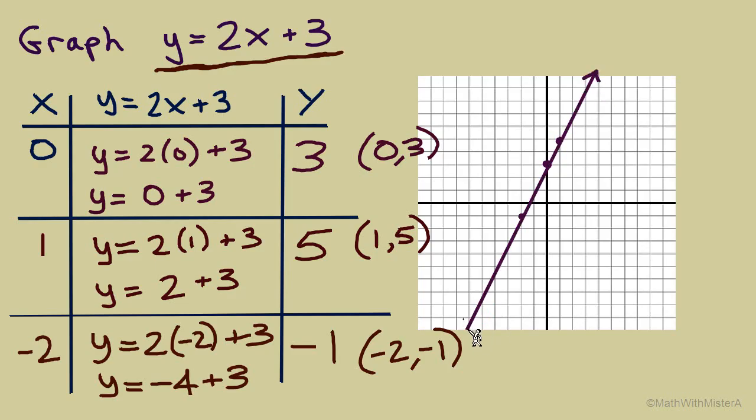We'll put an arrowhead on this line because it does extend forever. Let's also label these axes x and y. That's a good strategy, a good habit. And it's also good to put our scale for this graph, that each box equals 1. There is the graph of this equation, y equals 2x plus 3.